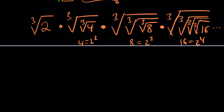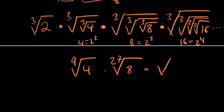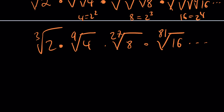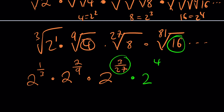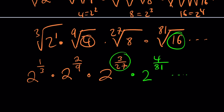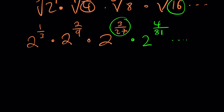Since 2 is going to be under one cube root, we can write it as 2 to the power one third. This will be the 9th root of 4, the 27th root of 8, the 81st root of 16, and so on. So: 2 to the first under a cube root gives 2 to the power one third. This is 2 to the second power, giving 2 to the power two ninths. This is the critical part. Then 2 to the third gives 2 to the power three over 27. Don't simplify this — you need that pattern. And then you get 2 to the fourth over 81. This will go on forever.